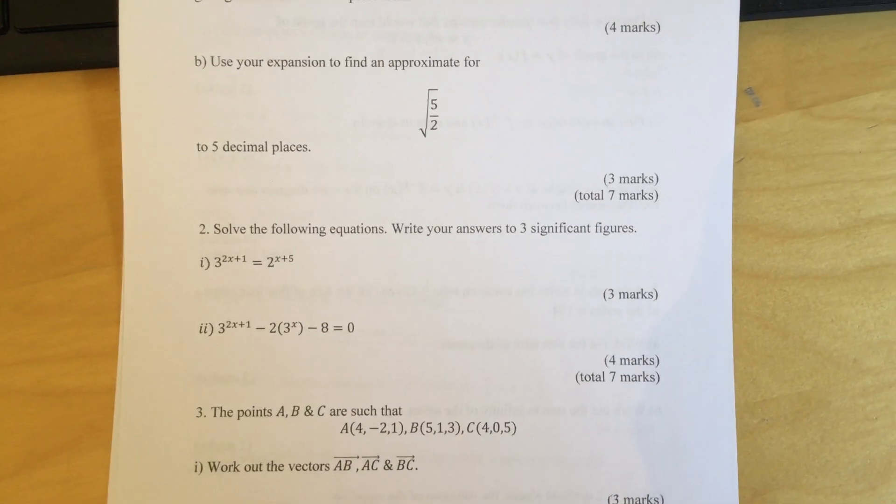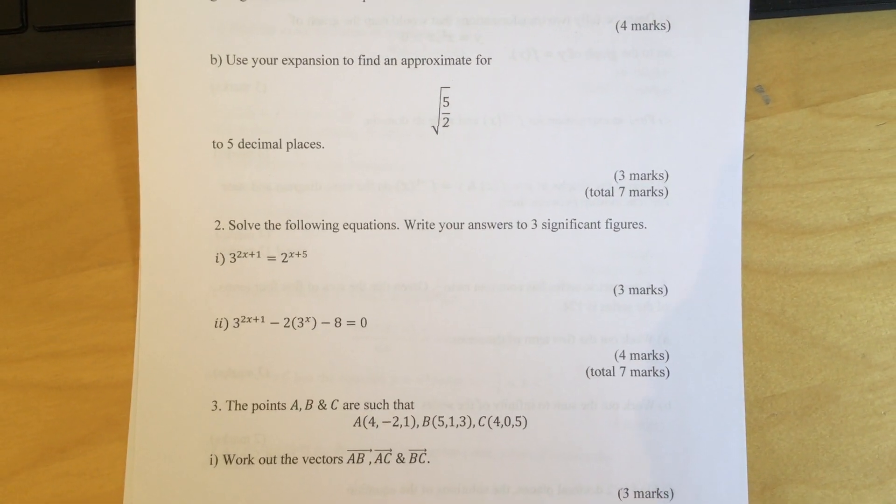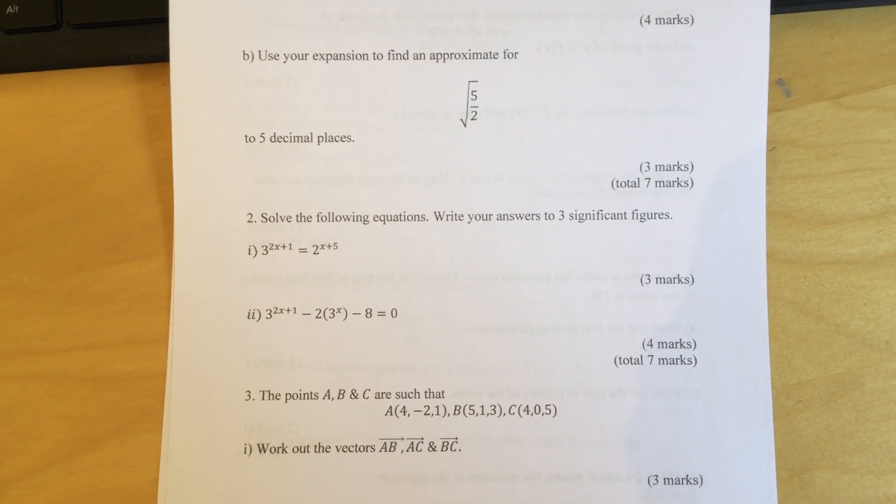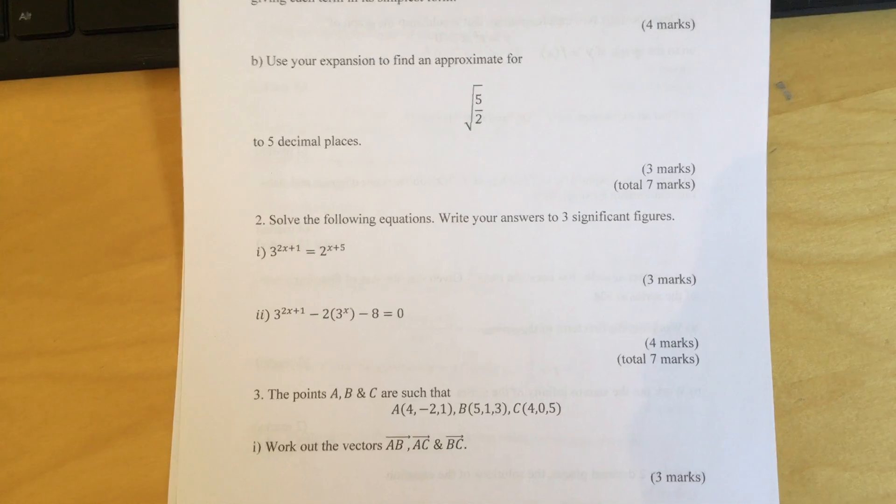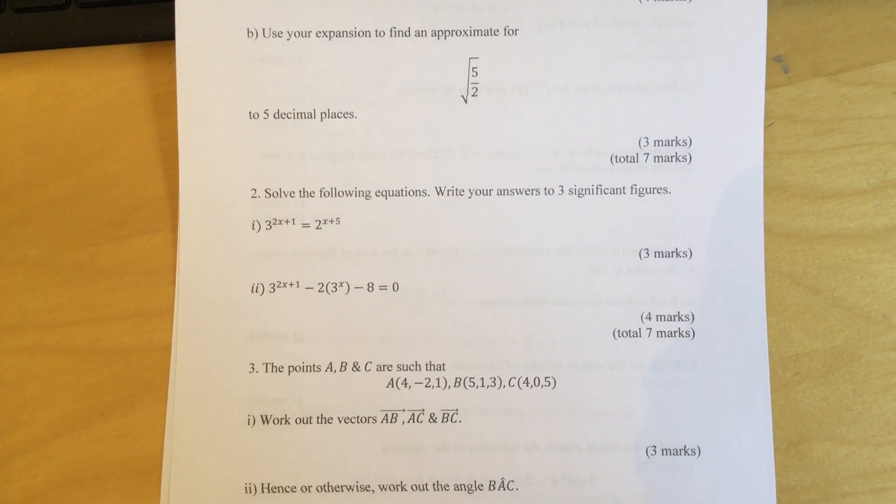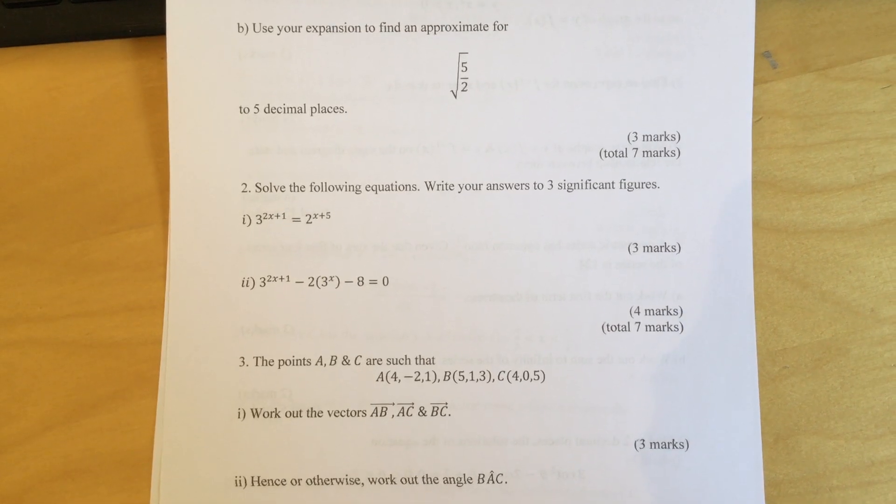Question 2: Solve the following equations. Write your answers to three significant figures. Part i: 3^(2x+1) = 2^(x+5). Part ii: 3^(2x+1) - 2(3^x) - 8 = 0.